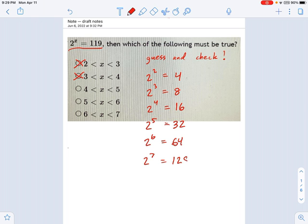2 to the 7th is 128, and I want to stop there, because look what just happened. I overshot 119. 119 is somewhere in between these guys.